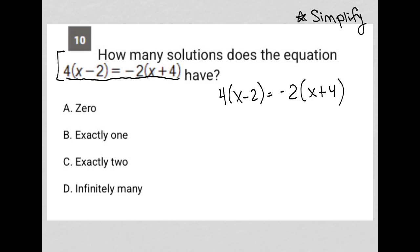I'm going to simplify this equation by distributing the 4 across here as well as the -2 across there. And what I end up with is 4x - 8 is equal to -2x - 8.